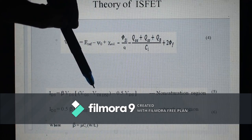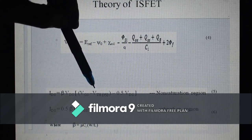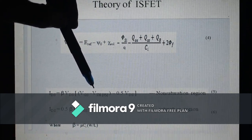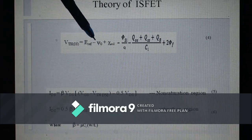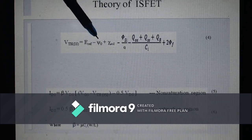However, V-threshold can be chemically modified via interfacial potential ψ0, which is a function of solution pH.